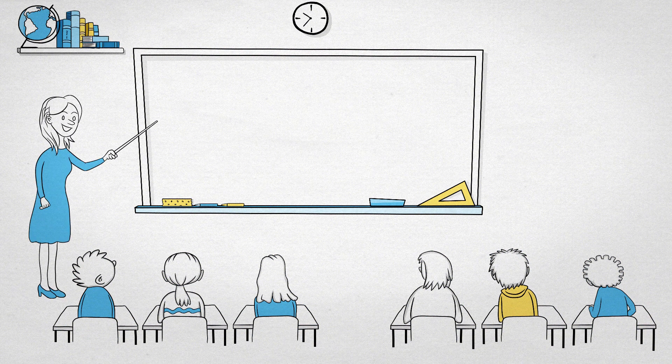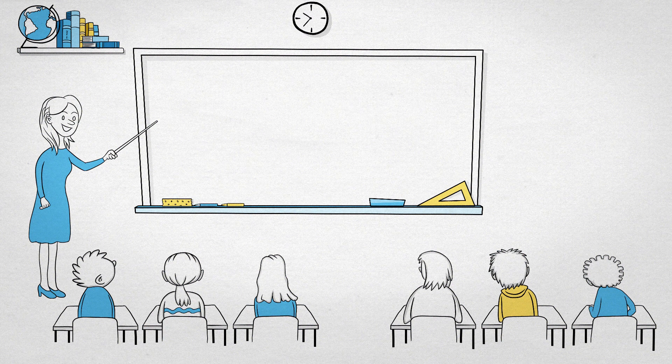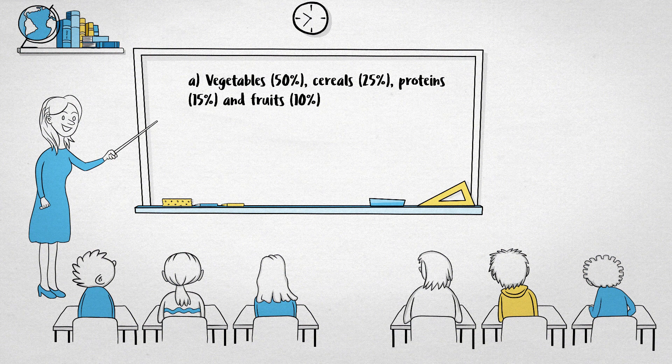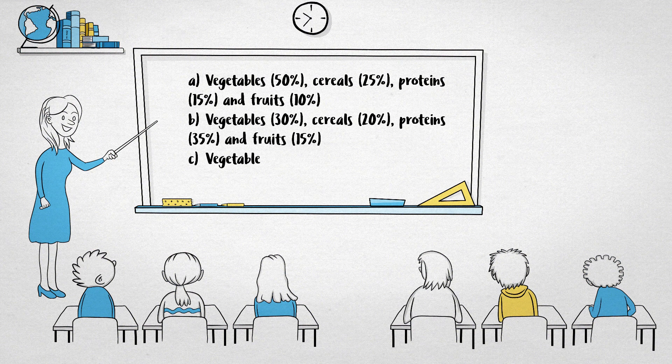It is essential to include all these nutrients in the right quantities in what we eat every day, especially for children and teens who are growing up. Which of these options show the right proportion of nutrients that we should eat in our daily meals?